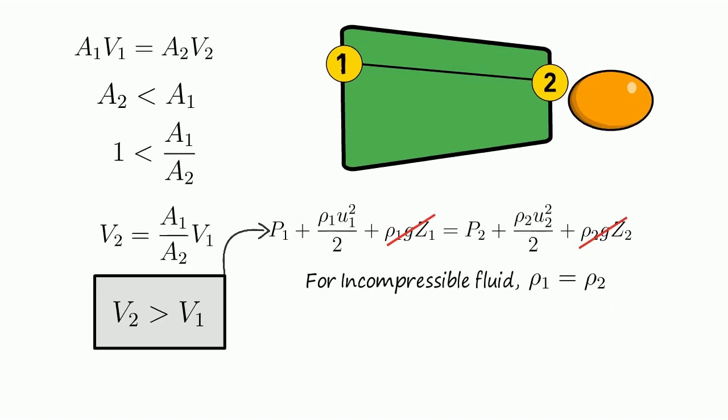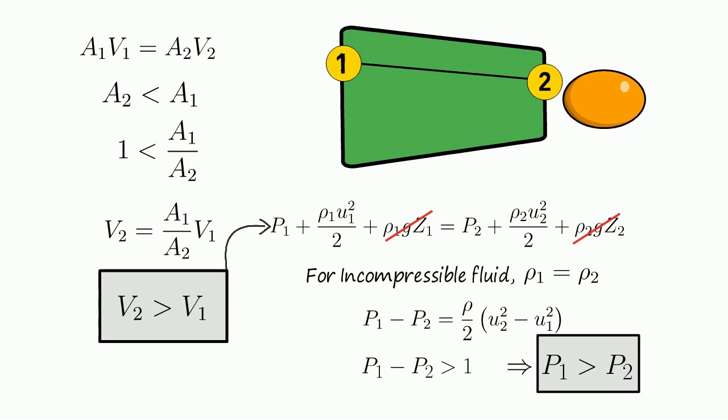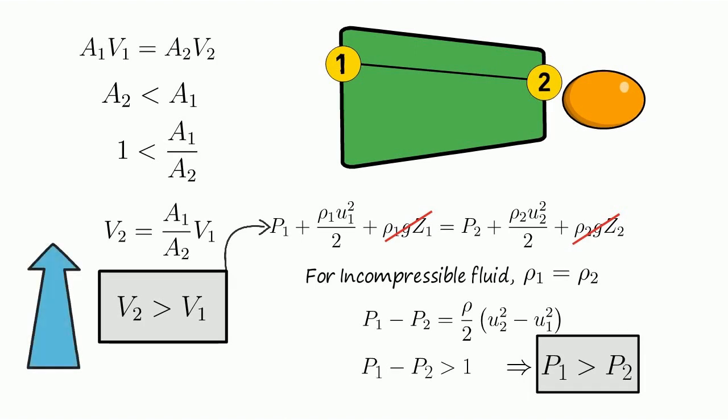Clubbing this equation into Bernoulli's equation results, we get less pressure on point 2. Here velocity is increasing from 1 to point 2. But at which cost? At the cost of pressure.